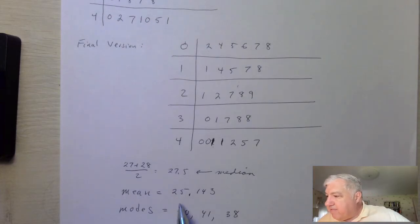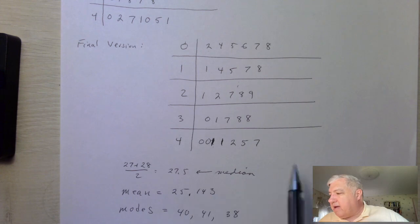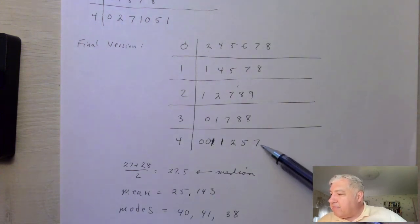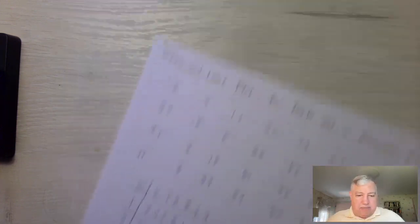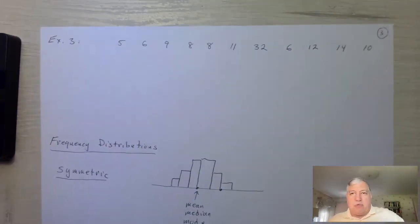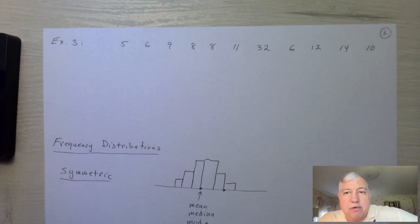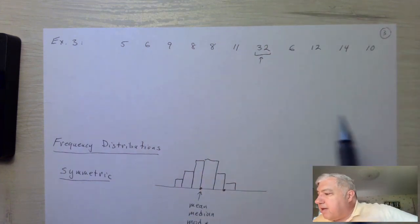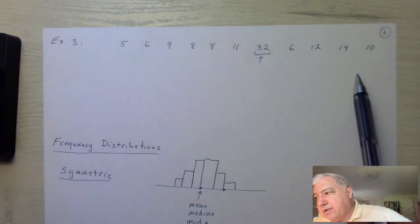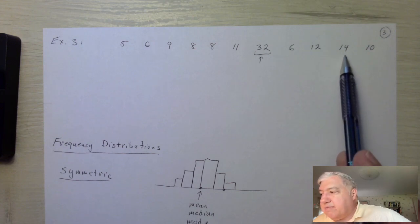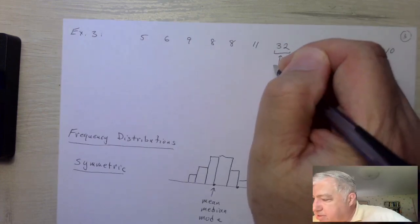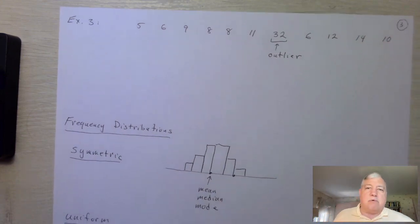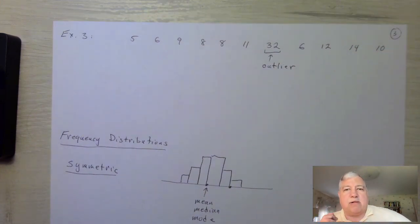In these two examples there weren't too many outliers — no values way out from the others. But in Example 3 we have an outlier. You can see that the outlier appears to be 32, because the closest value to 32 looks like 14 — a difference of 18 units. This is clearly an outlier even without the technical definition. Outliers are more likely to affect the mean than the median.